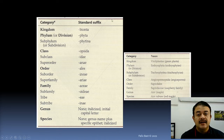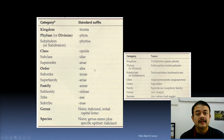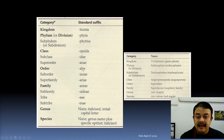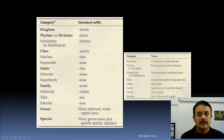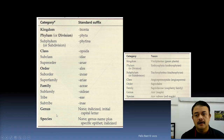By looking at the standard suffix of a name, you can guess what taxonomic level it belongs to. For example, any name ending in -ALES is an order, while -ACEAE is a family. Class names typically end in -OPSIDA. Genus and species don't follow a fixed suffix; the genus usually follows the specific epithet in terms of Latin grammar.